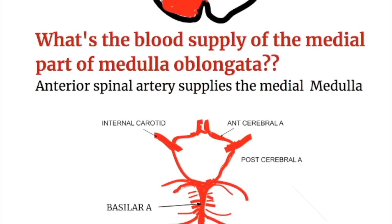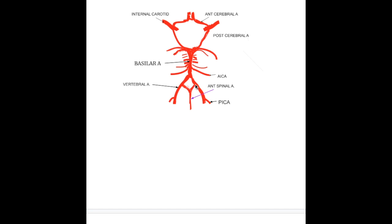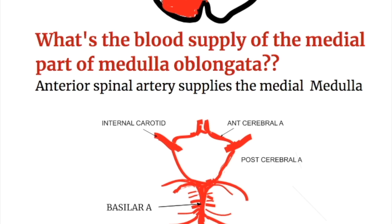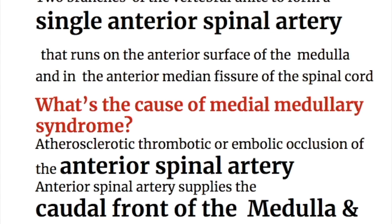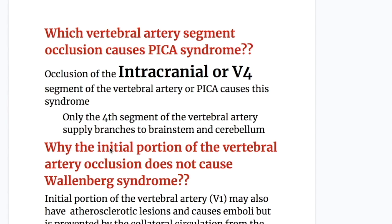What is the origin of the anterior spinal artery? Two branches, one from each vertebral artery just before its termination, unite to form the anterior spinal artery, which runs in front of the medulla in the anterior spinal fissure. The cause of medial medullary syndrome is atherosclerotic, thrombotic, or embolic occlusion of the anterior spinal artery. Occlusion of the intracranial V4 segment of the vertebral artery or PICA causes Wallenberg syndrome.